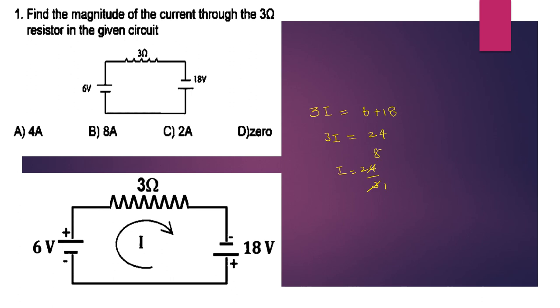So we will get 24 in the 3 ohm resistor. I is equal to 24 divided by 3. That is the current, I equals 8 amperes.